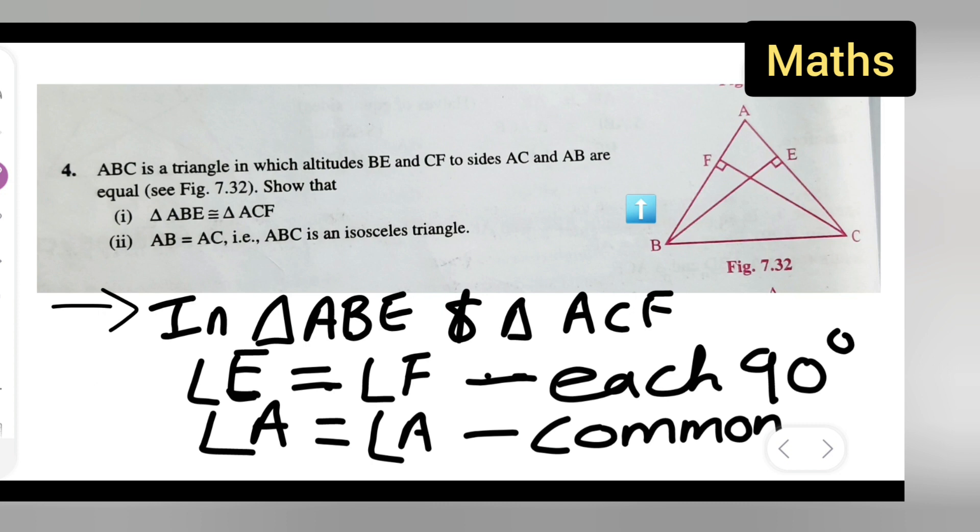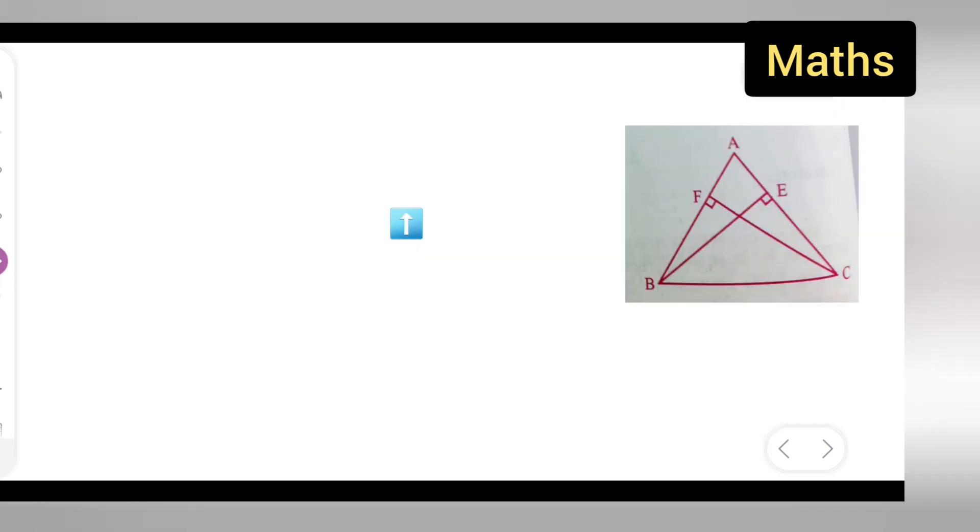Next, what is given in the question, that BE and CF are equal altitudes. So I'll write down that BE is equal to CF, and that is given.